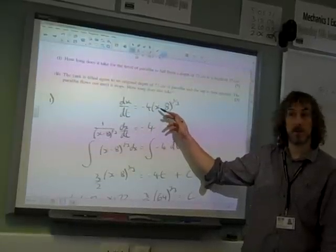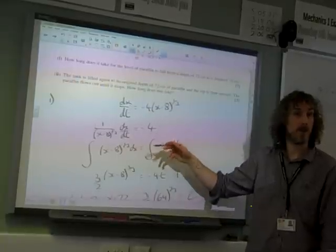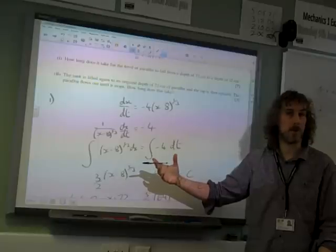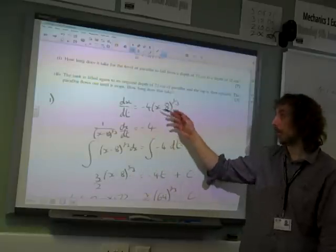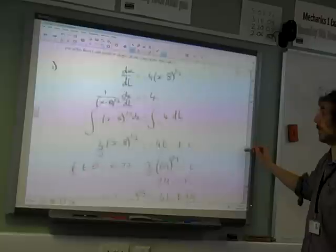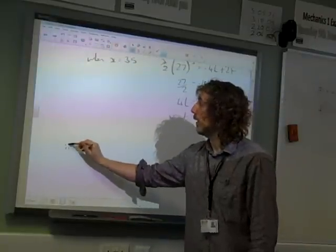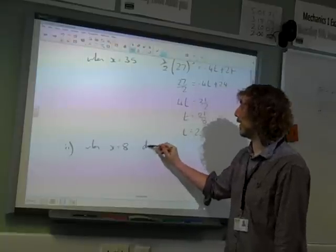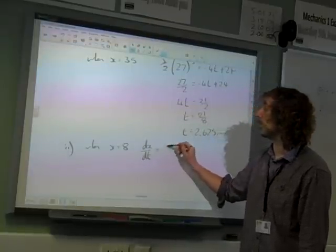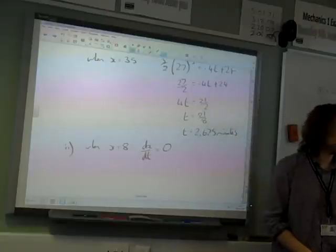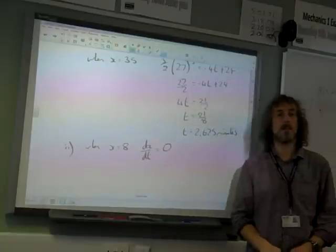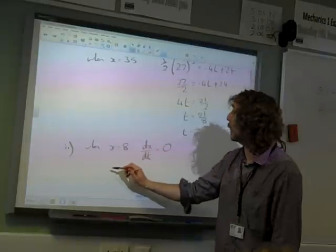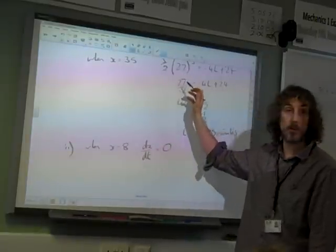It wouldn't then make sense for x to go below 8 in terms of what's going on in this question. That would be completely illogical. So once we get to 8, it stops. When x equals 8, dx by dt equals 0. At that point, the rate of change becomes 0. So at that point, all the paraffin has flowed out. So we need to sub that back into our original equation.